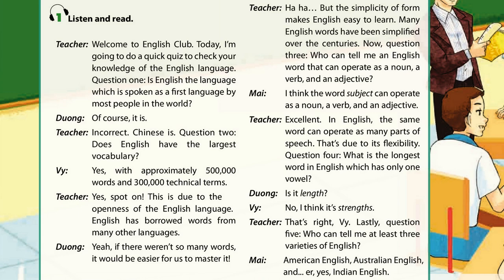Question 4: What is the longest word in English which has only one vowel? Is it 'length'? No, I think it's 'strength'. That's right. Lastly, Question 5: Who can tell me at least three varieties of English? American English, Australian English, and Indian English.